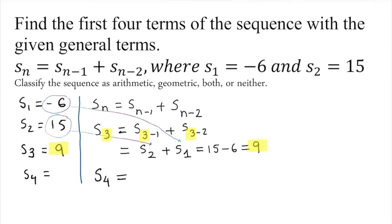So s_4 is equal to, now instead of n we substitute 4: s_{4-1} plus s_{4-2}, so what we have is s_3 plus s_2. We have s_3, so you're gonna substitute s_3 which is 9, and we already know s_2 which is 15. So we have 9 plus 15, which gives us 24. So s_4 equals 24.